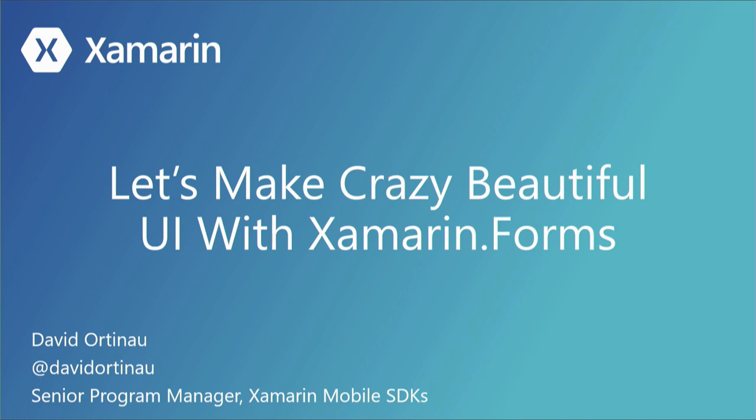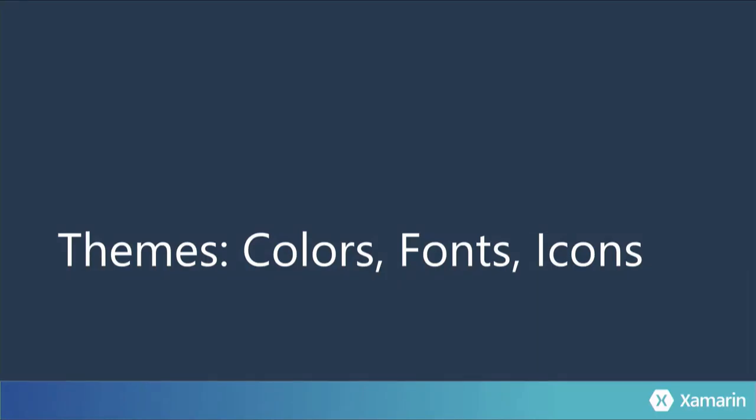So I thought the first thing we would talk about is themes, colors, fonts, and icons, because you've probably followed the Apple announcements. iOS 13 now has dark mode — more phone time in bed, that's what we're talking about. People are going to be asking you, maybe you're already asking: how can I better support these kinds of things in my app? Make sure that your app feels like it belongs on the iOS platform as well as Android.